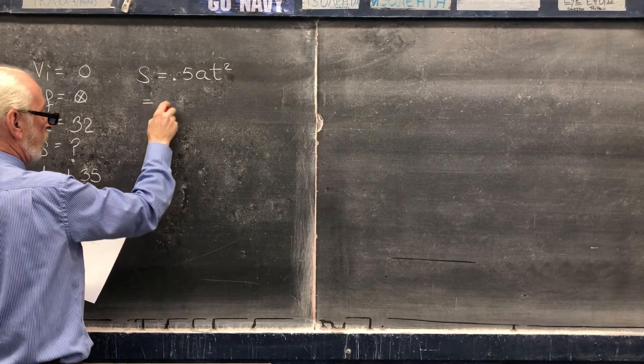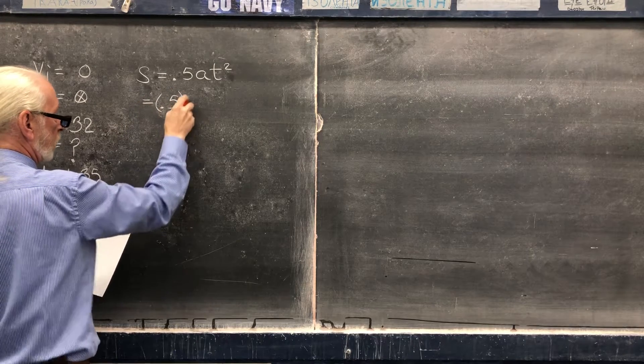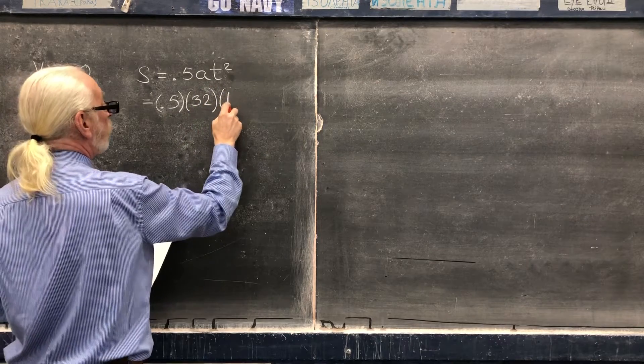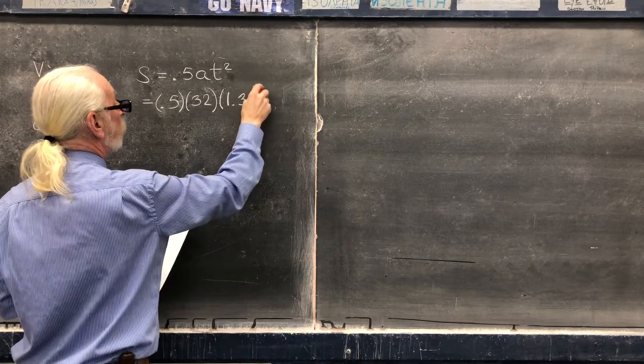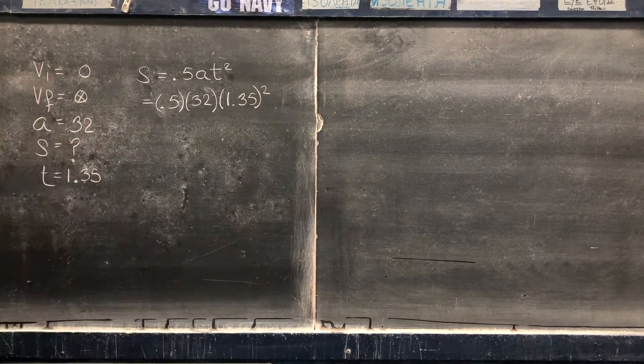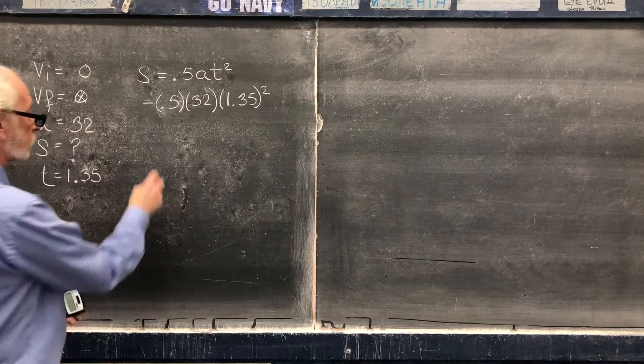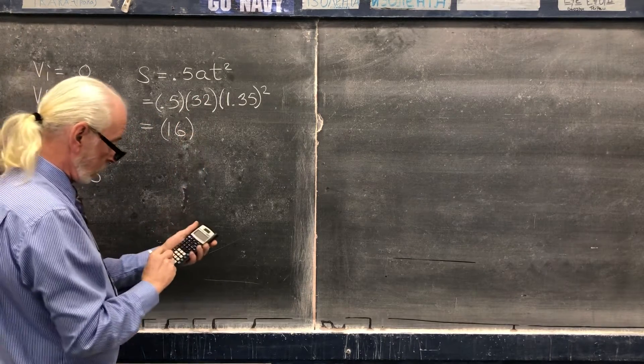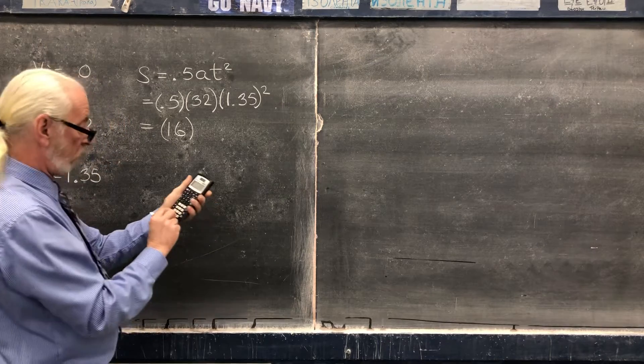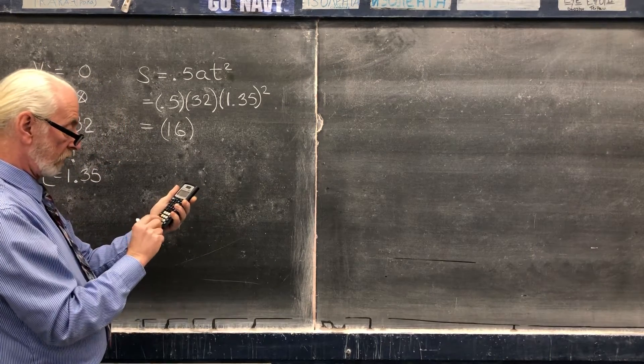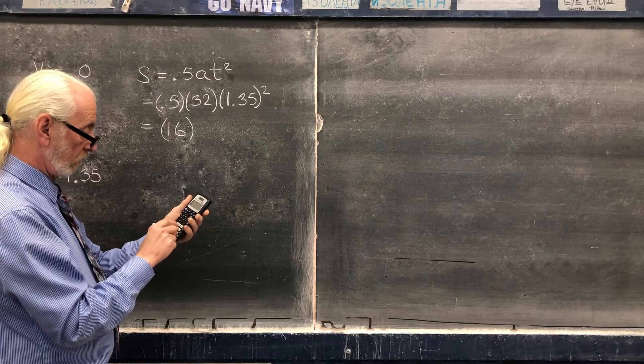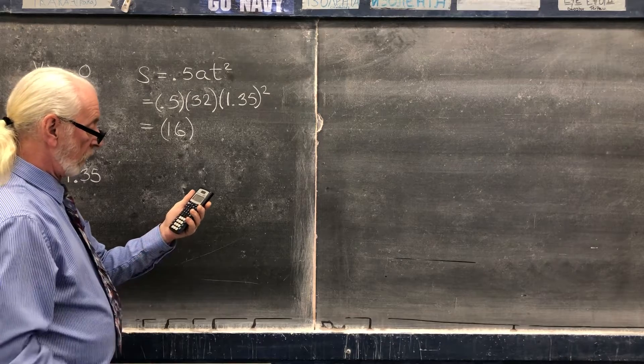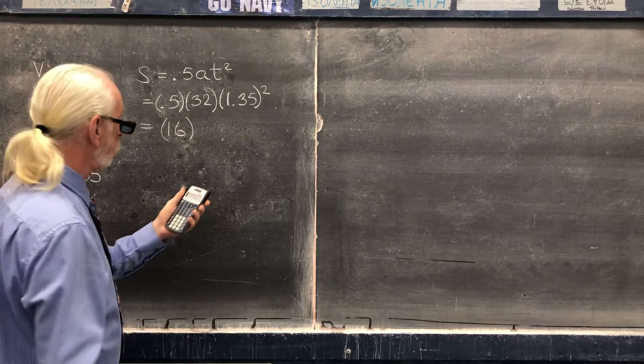Once again we just plug and chug: 0.5, 32, 1.35 squared. That equals 16, 1.35 squared I got 1.823 if I round it.